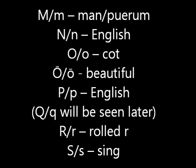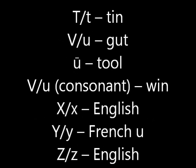The letter N you would pronounce as in English. The letter O you would pronounce as O, like cot. A long O you would pronounce as EW, like beautiful. The letter P you would pronounce as in English. The letter R would be a rolled R. The letter S would be an S sound, as in sink. The letter T would be a T sound, as in tin.